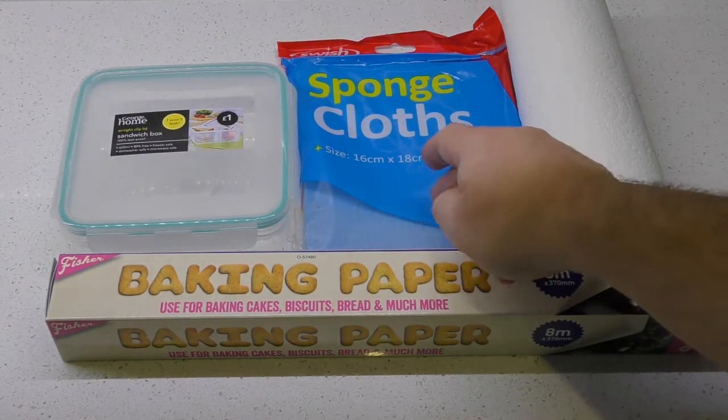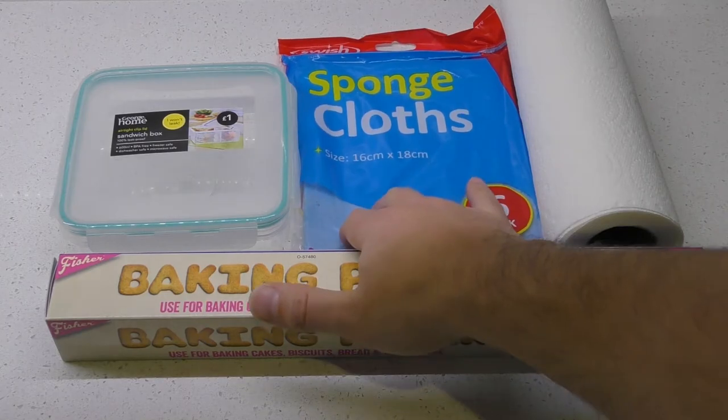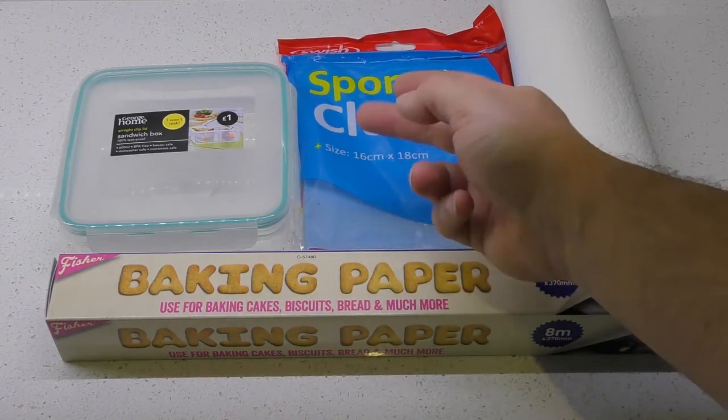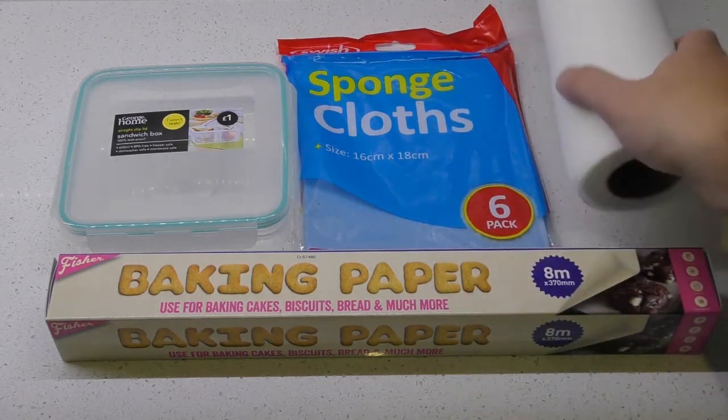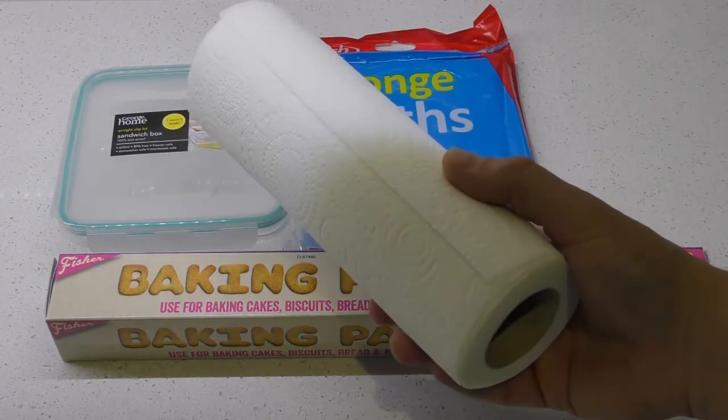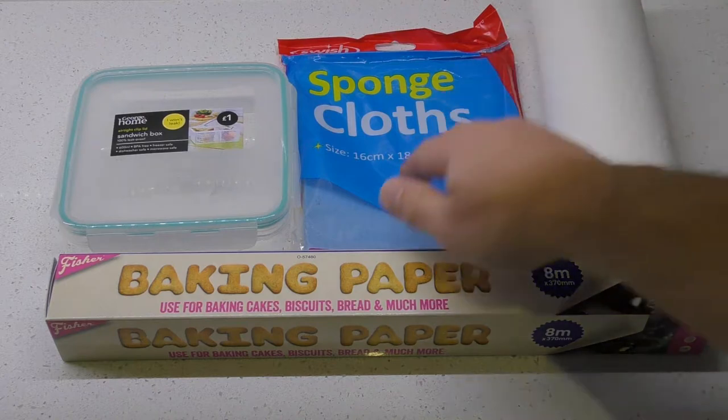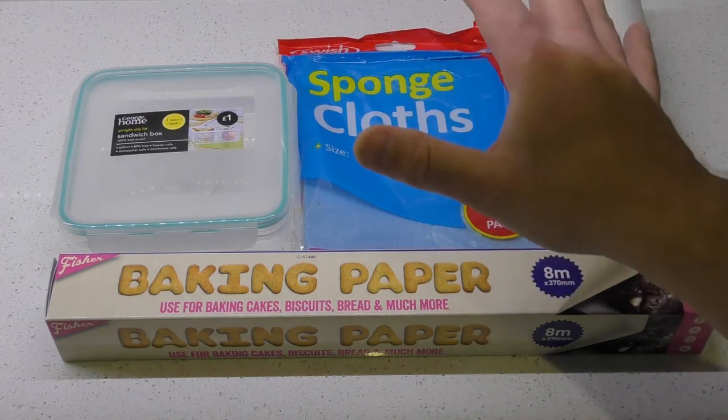We've then got some sponge cloths. If you haven't got access to these, I bought them from a pound world, six for a pound, you're only going to use one. You can use kitchen roll as well instead. I'll show you how to use either method and the choice is up to you.